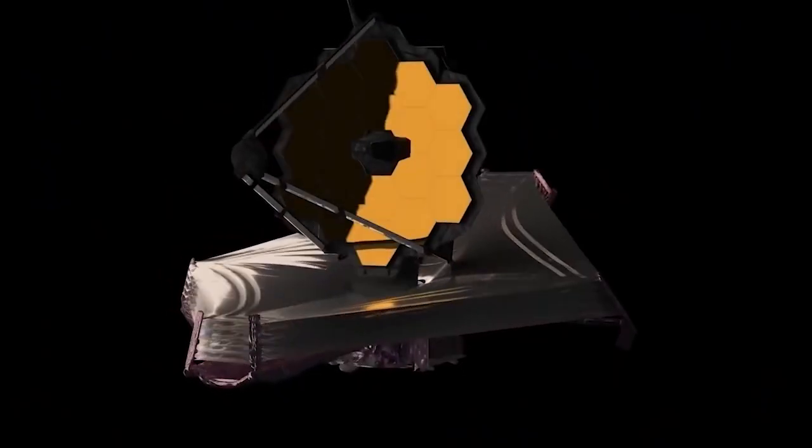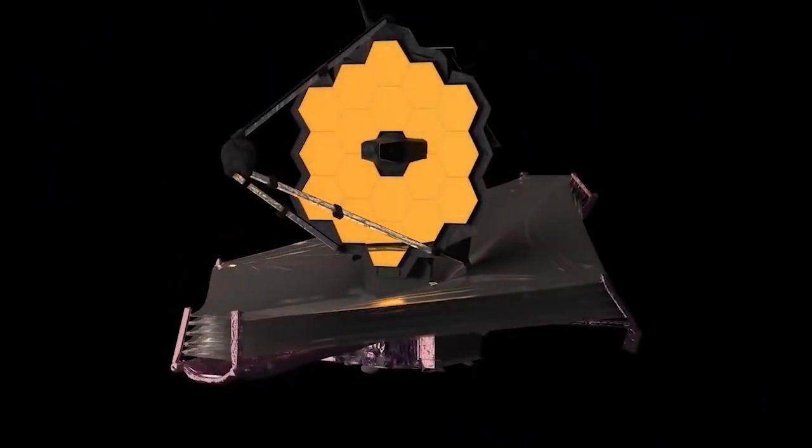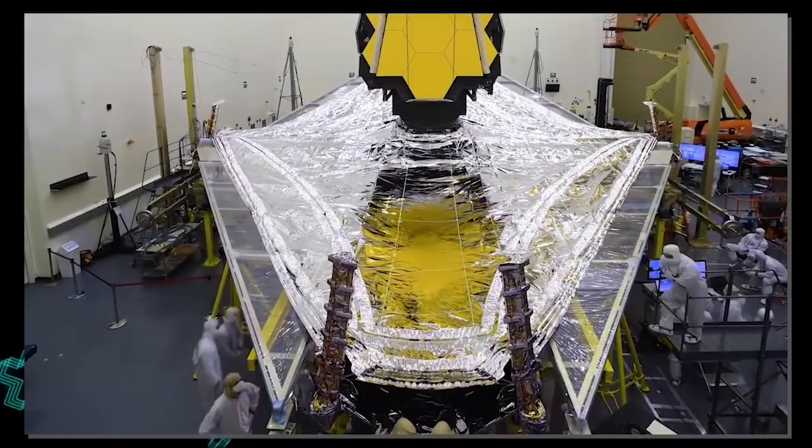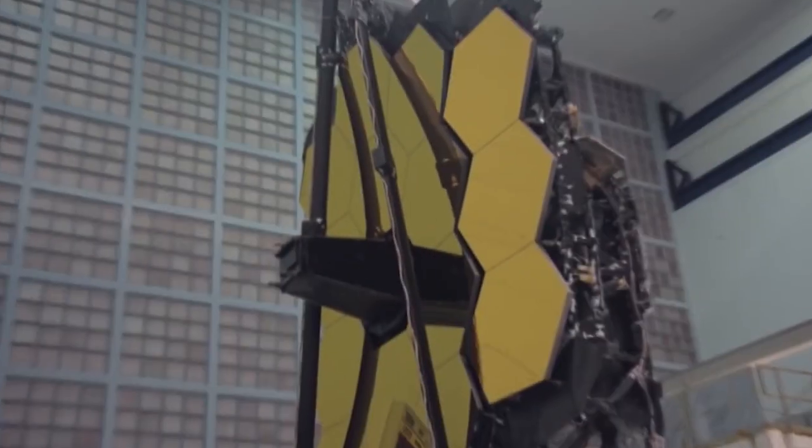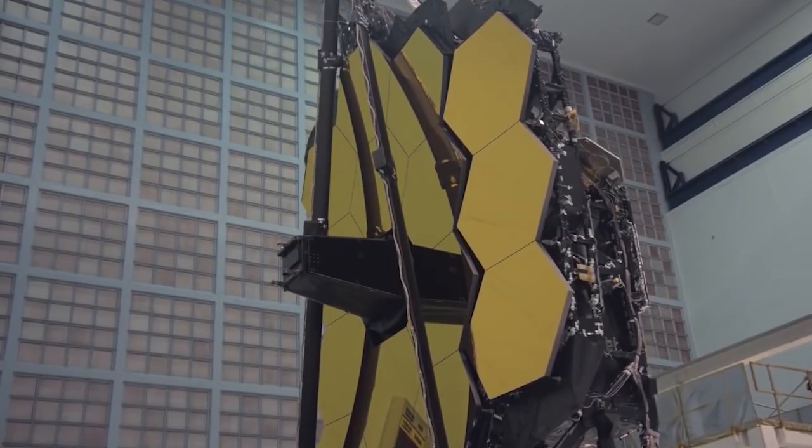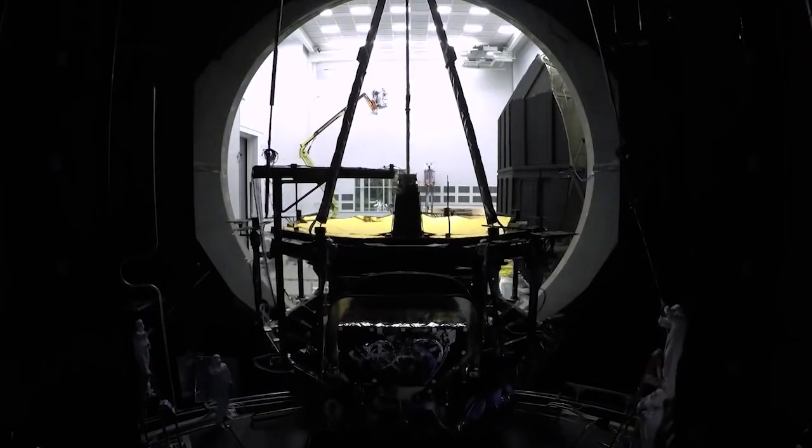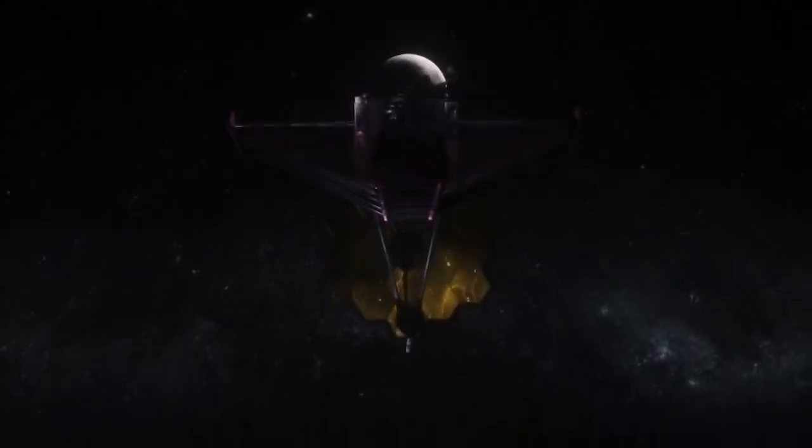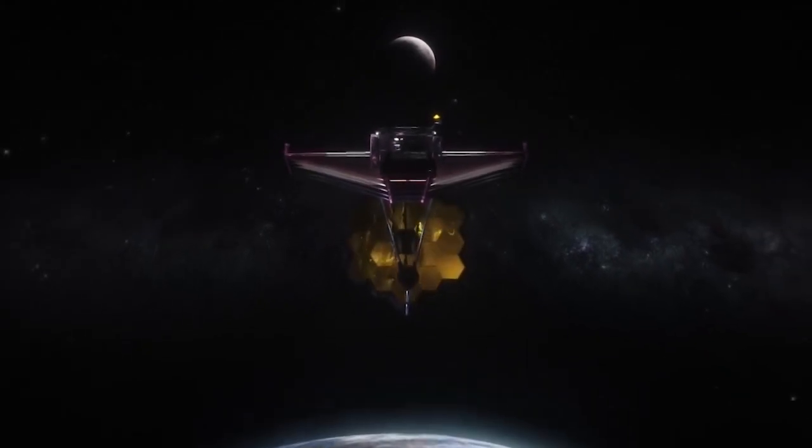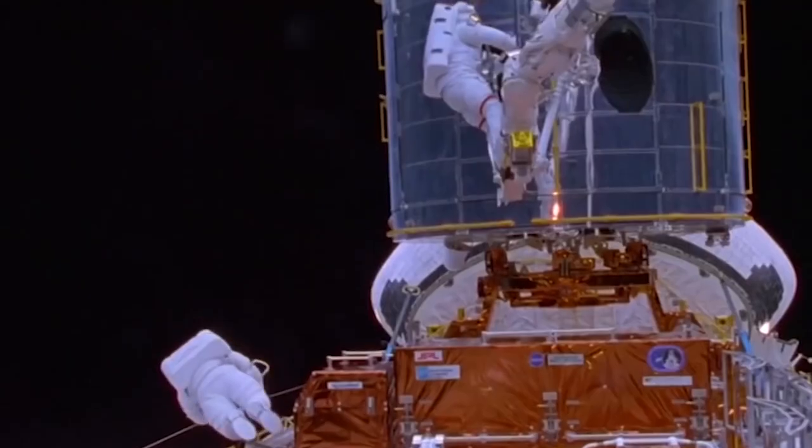LHS 3844b. Webb scientists will be able to study the solid rock on an exoplanet surface on the much smaller and cooler LHS 3844b. Because different types of rock have different peaks, the Webb team will use MIRI to learn more about the planet's makeup. Which image piqued your interest the most?